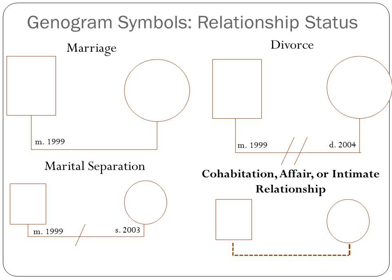A dotted line instead of a solid line indicates two people who were in an intimate or sexual relationship that was not a marriage — dating, cohabitation, an affair, or a general relationship. We do not put years for cohabitation relationships — we only put years for marriage, divorce, and marital separation. So for a dotted line relationship, there are no start or end years noted.